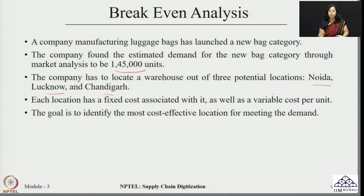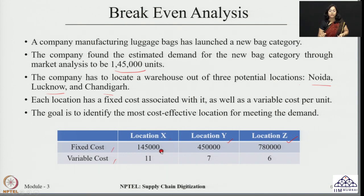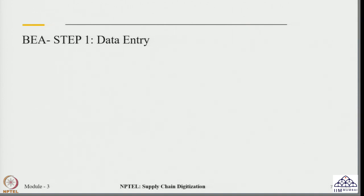Our goal is to identify the most cost-effective location which will help in meeting the demand. To summarize the given information: we have three locations — Location X (Noida), Location Y (Lucknow), and Location Z (Chandigarh) — with their respective fixed costs and variable costs. Location X has a fixed cost of 1,45,000 and a variable cost of 11 per unit. Location Y has a fixed cost of 7,80,000 and a variable cost of 6 per unit.